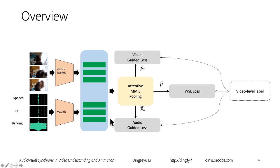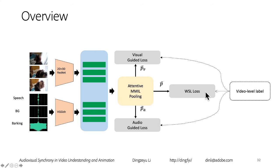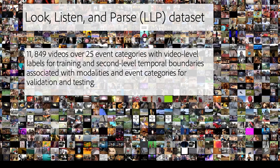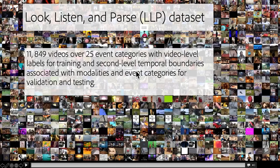The thesis of our project is to conduct weakly supervised training. We don't want our training dataset to have all these second-level predictions. Instead, we only ask users to do video-level labeling. Therefore, we need a pooling process. Conventionally, mean pooling or max pooling is used. We propose an attentive MMIL pooling process — MMIL means multi-modal multi-instance learning. After this pooling, we have a video-level prediction to compute the loss. We collect the Look, Listen, and Parse (LLP) dataset. For training we only use video-level labels, and for testing we annotate second-level temporal boundaries for both audio and visual modalities.